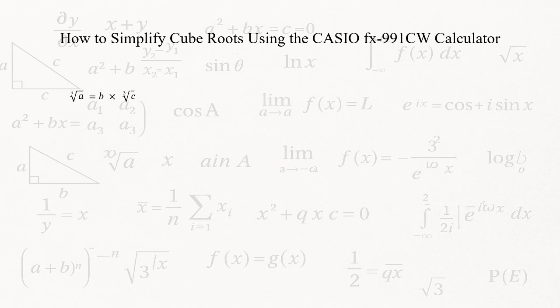First, the key idea: to simplify a cube root, break the number into its prime factors. If a prime's exponent is a multiple of three, you can pull it out of the cube root.